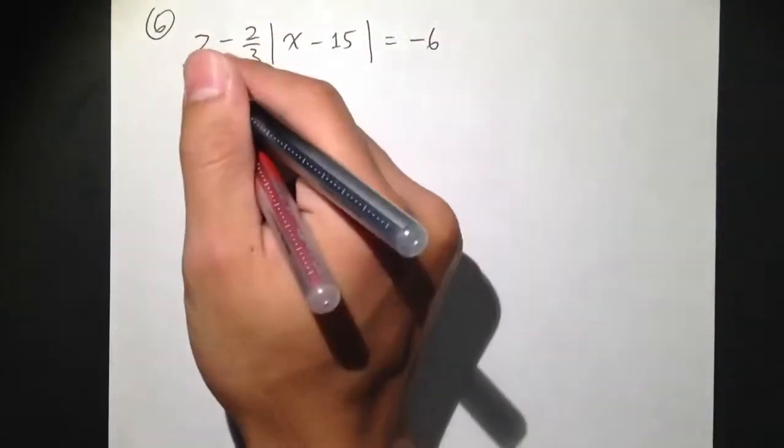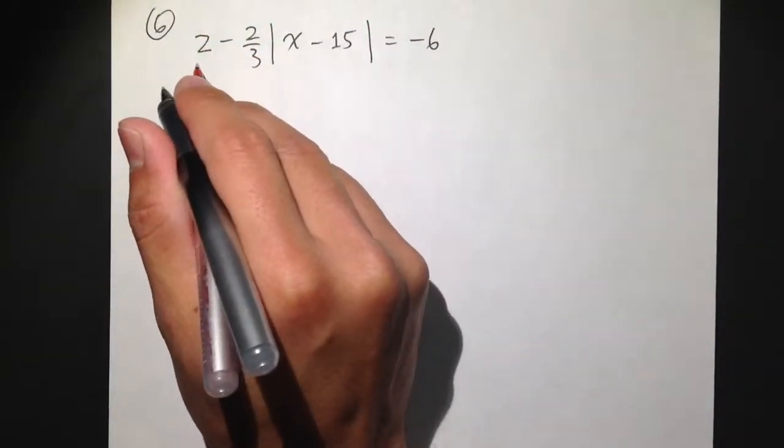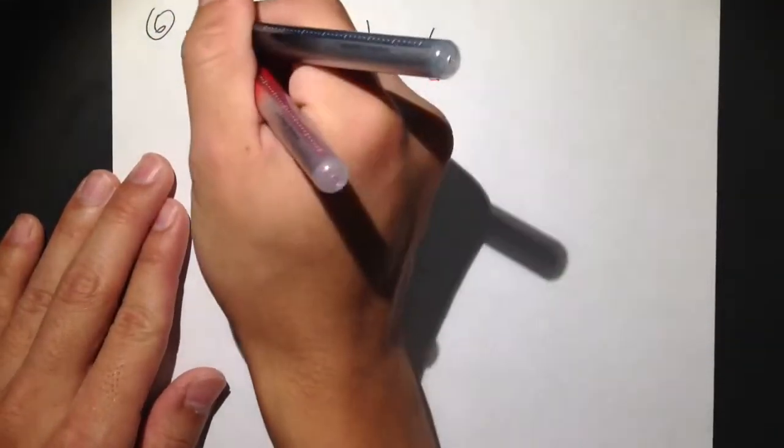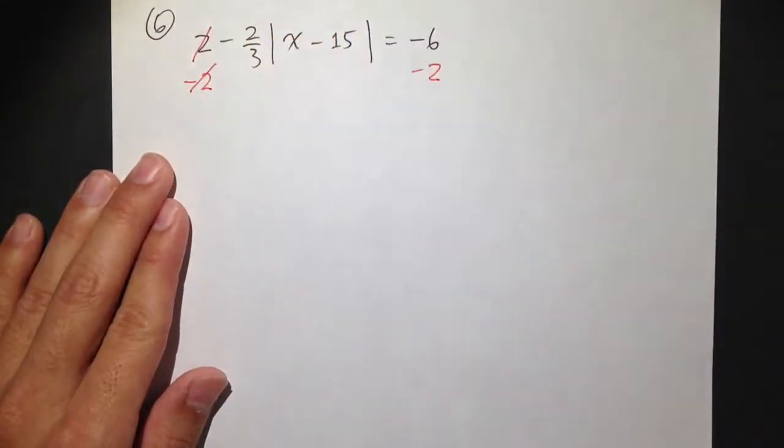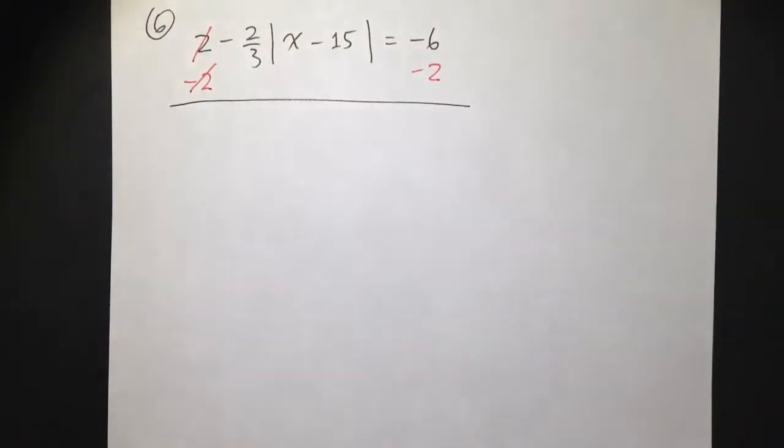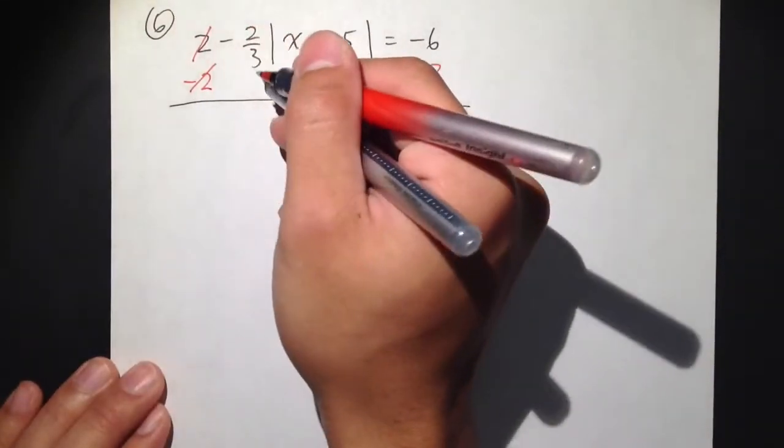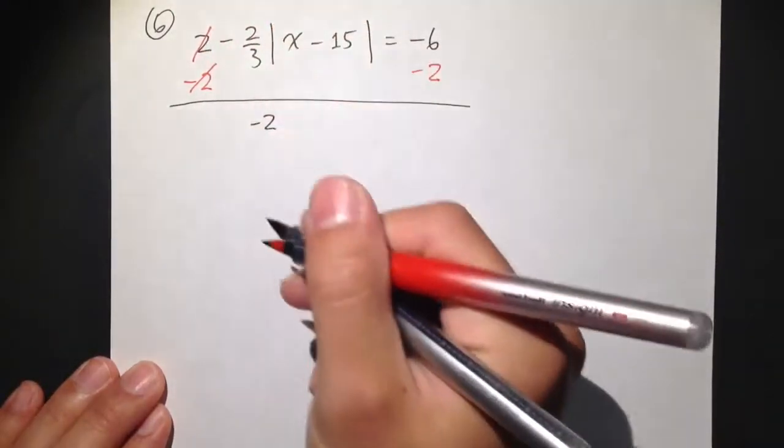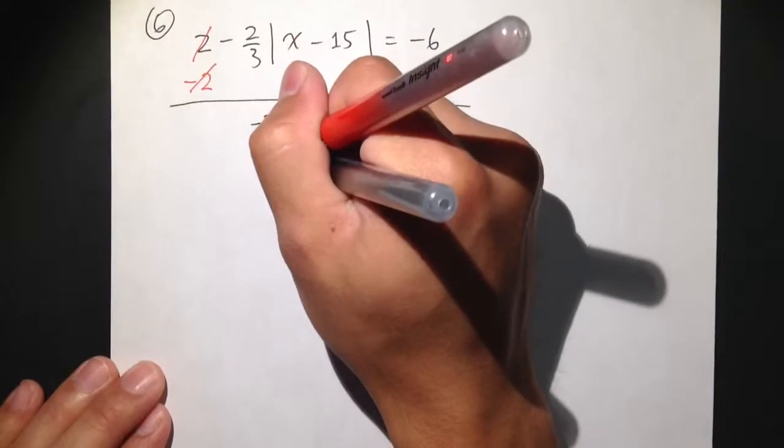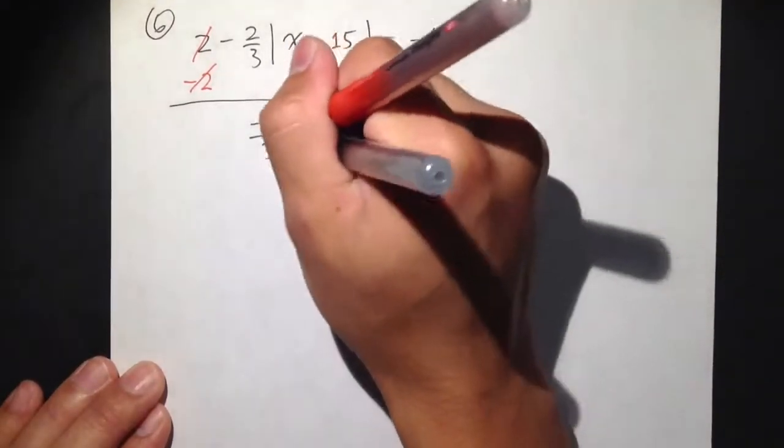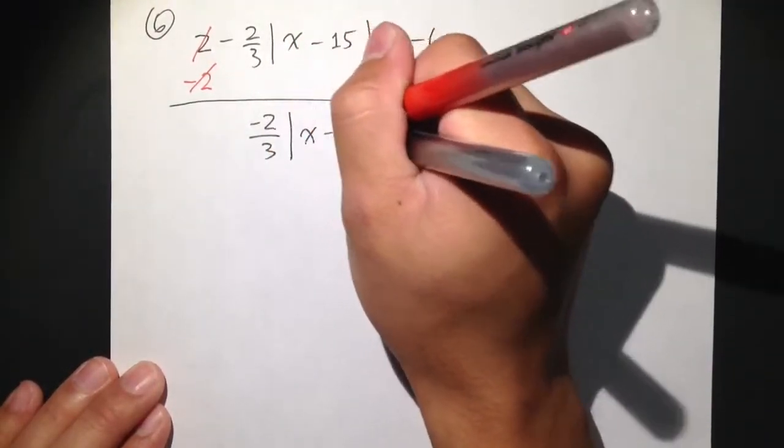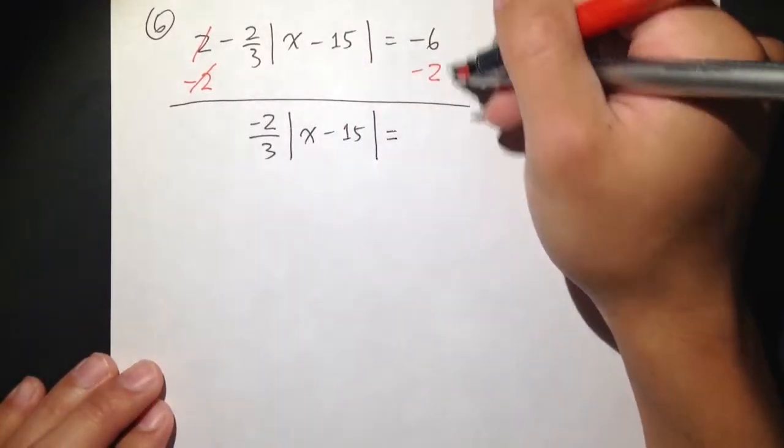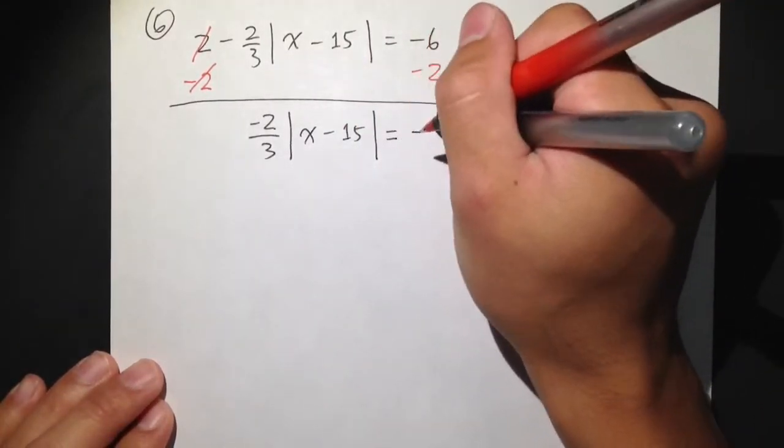So let's do that. I see I have the 2 right here. Let's get rid of this 2 first by minus 2 on both sides. So this 2 in black will cancel with that 2 in red. And then I will get negative 2 thirds. And let me write negative 2 thirds as negative 2 on the top over 3, multiply the absolute value of x minus 15 equals to negative 6 minus 2, which is negative 8.